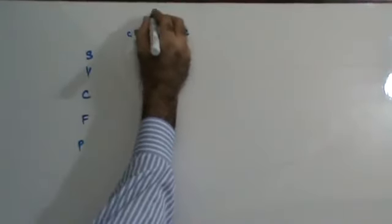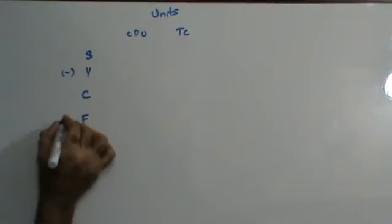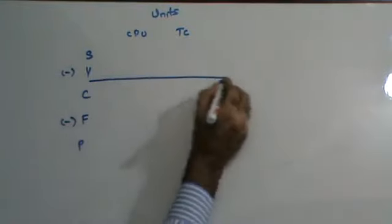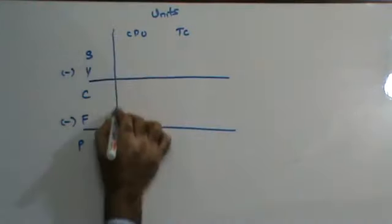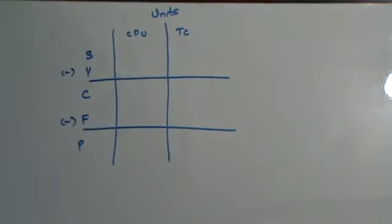CPU, PC, units. S minus V is equal to C. C minus F is equal to P. You always start the sum by making a table like this.